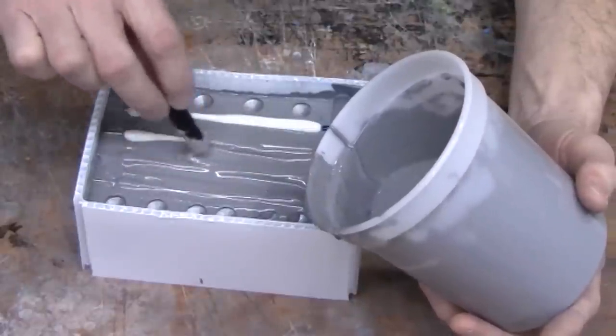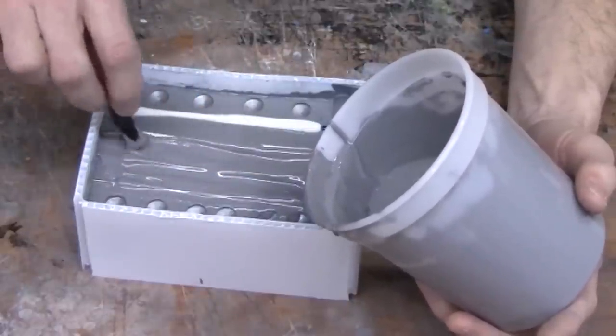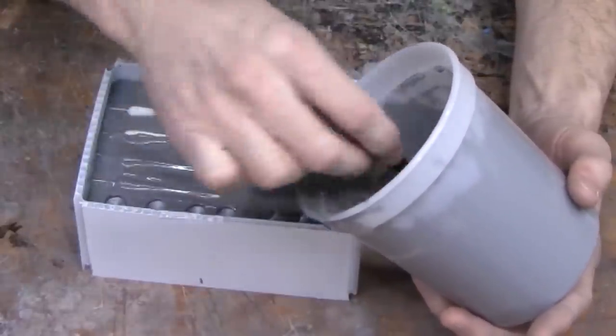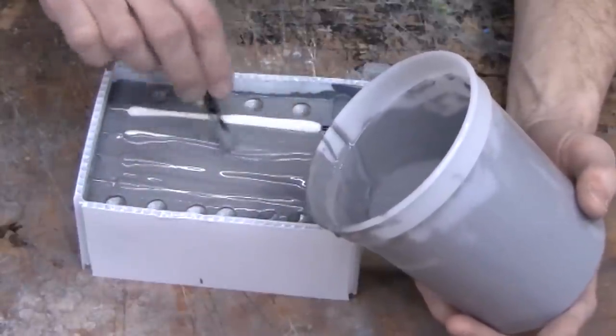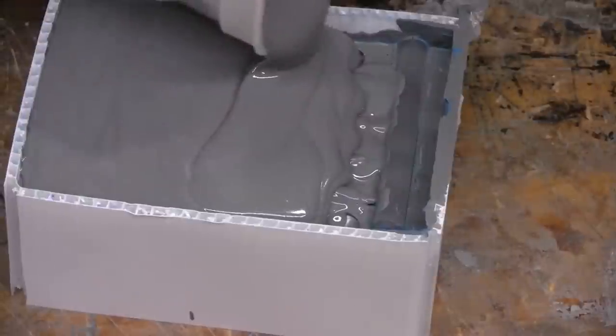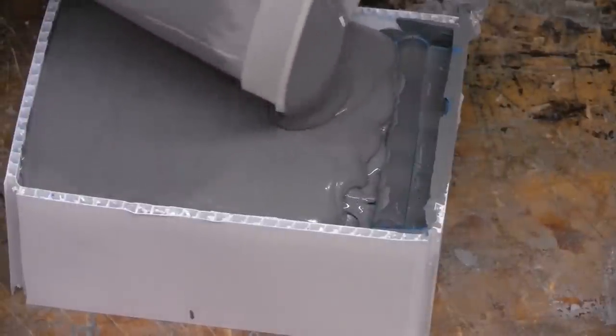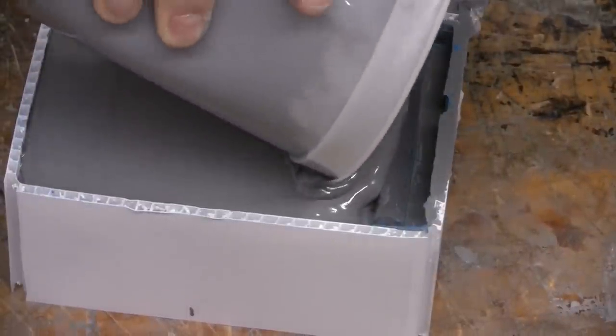Once again, we'd recommend brushing on the first layer just to make sure there's no air entrapment next to our lures, and then finish pouring. Wait another two to three hours for the VAC50 to cure, and you're ready to demold.